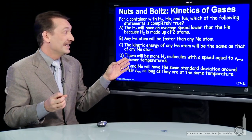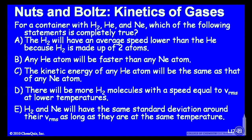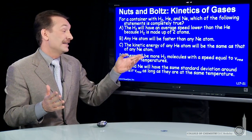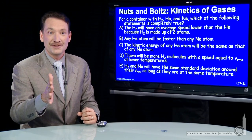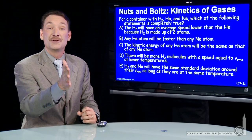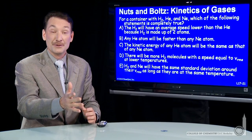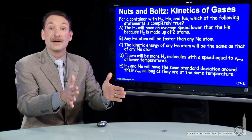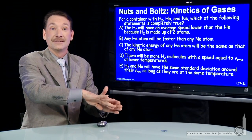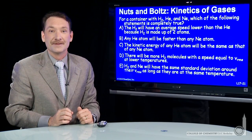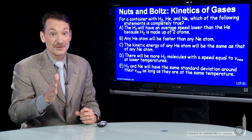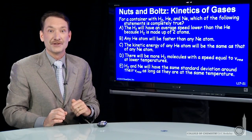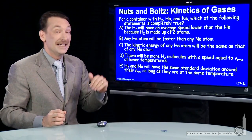Now back to D: there will be more hydrogen molecules with a speed equal to the root mean squared velocity at lower temperatures. That one is completely true and discusses only one gas. If we're talking about just the hydrogen particles and we reduce the temperature, that Maxwell-Boltzmann curve compresses and gets a higher peak near the root mean squared velocity. So the number of particles that have a root mean squared velocity is larger at lower temperatures for any gas. D is completely true.